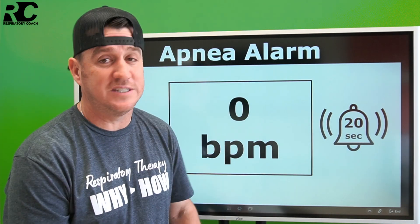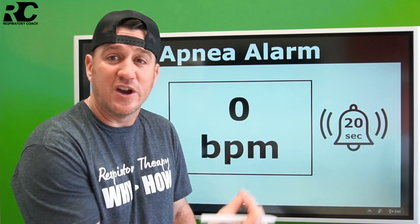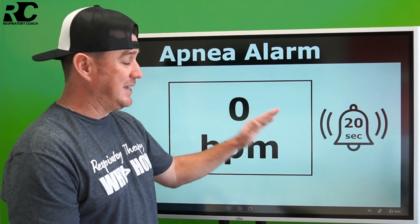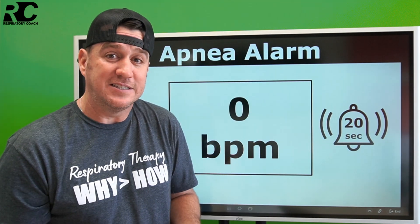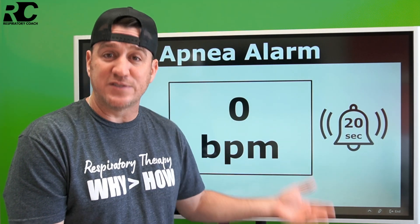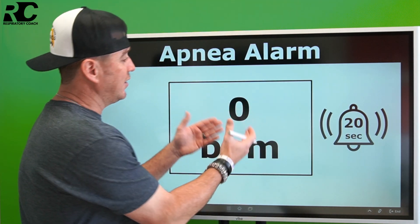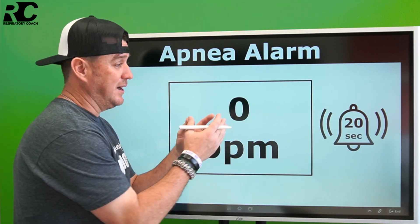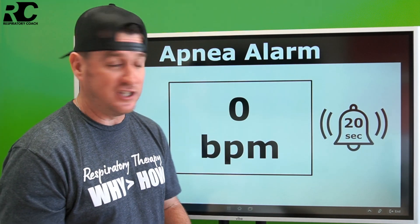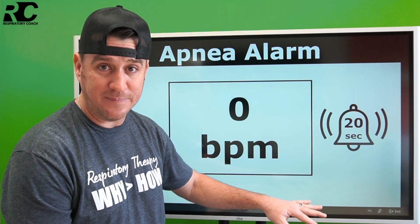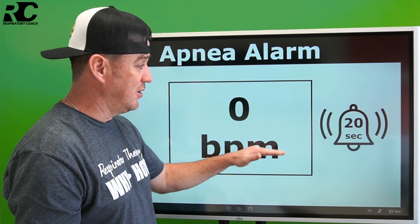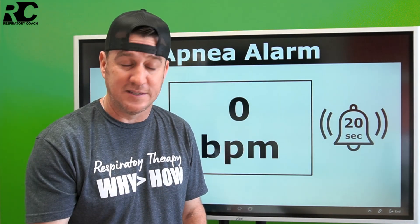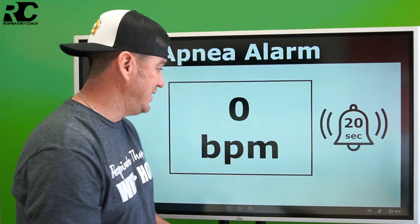You wouldn't want a patient receiving a tidal volume of 350 milliliters in CPAP to go apneic and have apnea settings kick in at 700 ml. It's always important to note your apnea settings when initiating mechanical ventilation, so that if this alarm activates due to an apneic episode exceeding the time set, the backup settings, rates, and volumes are appropriate for that patient.